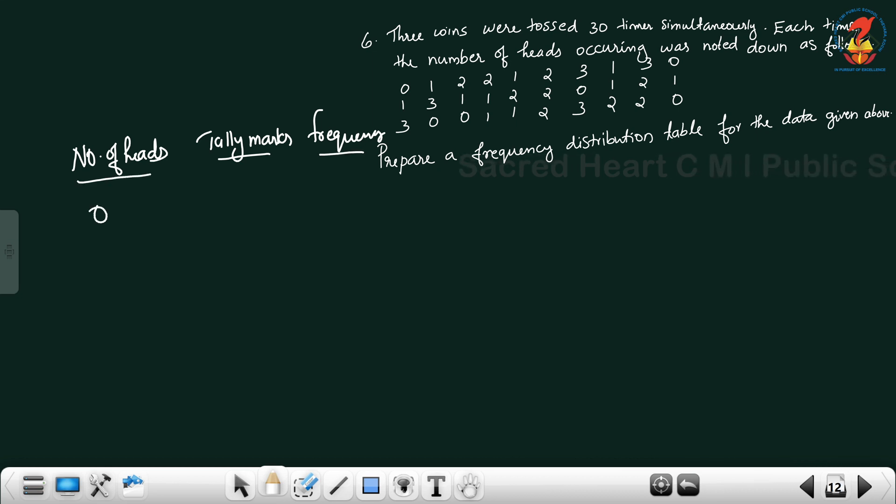How can you prepare the frequency distribution table? Number of heads: 0, 1, 2, 3. This is the number of heads.